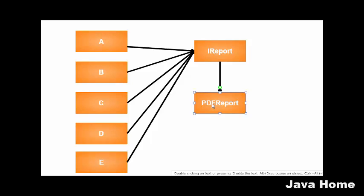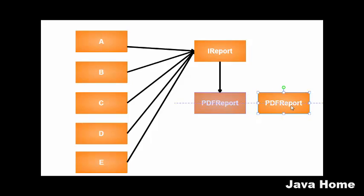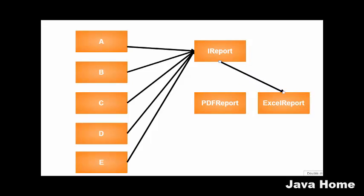Now tomorrow, if the client wants to replace PDF report with Excel report, we create a new class called Excel report. We remove the reference to PDF report and point to Excel report instead. Since classes A, B, C, D, and E all refer to the interface and not the implementation, there are no modifications needed in those classes. This gives much more maintainability compared to the design without abstraction.